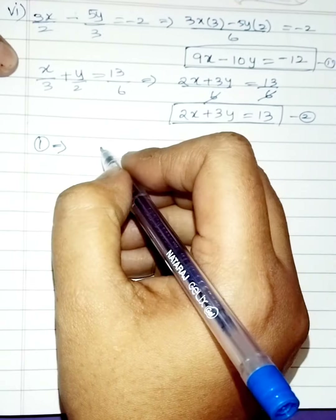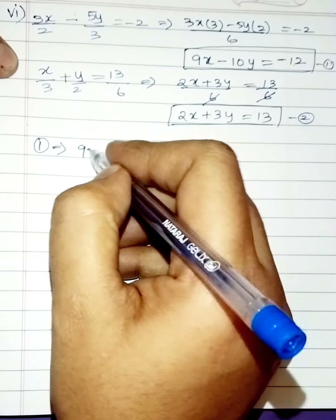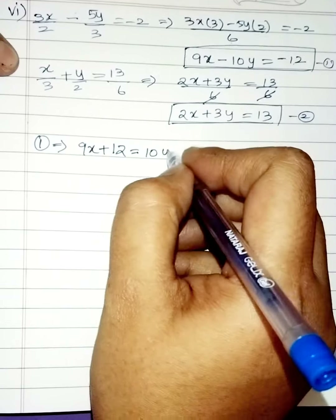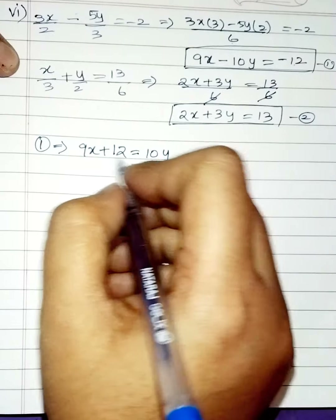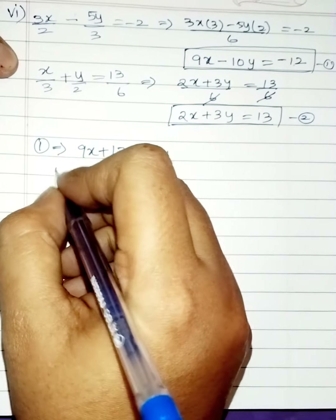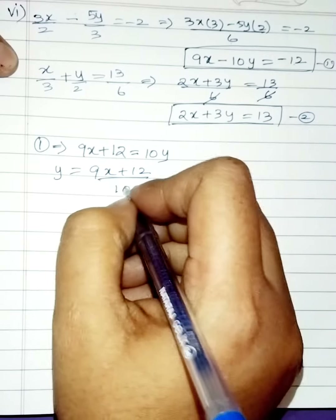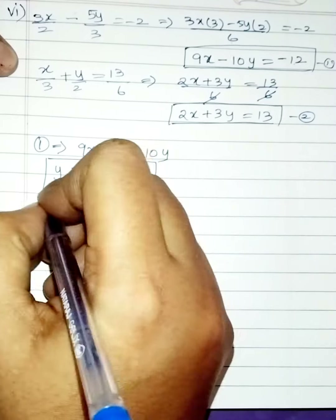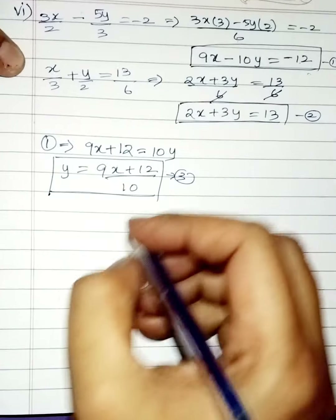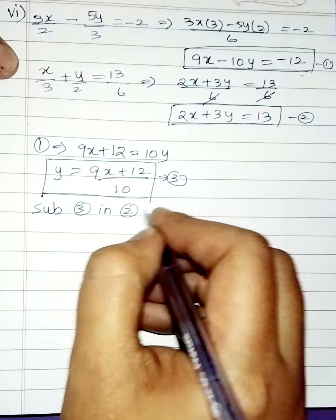From the first equation, find y: taking minus 12 to the left and minus 10y to the right gives 9x plus 12 equals 10y, so y equals (9x plus 12) divided by 10. This is the third equation. Since we used the first equation, substitute equation 3 into equation 2.